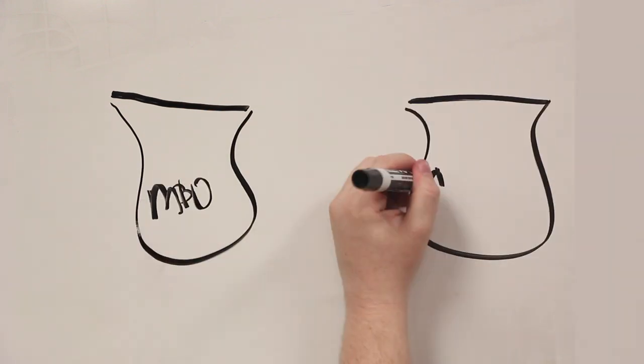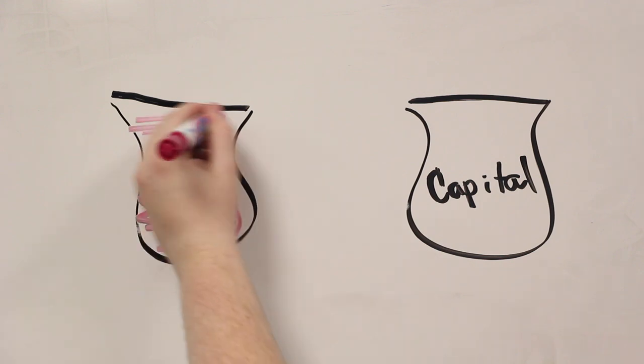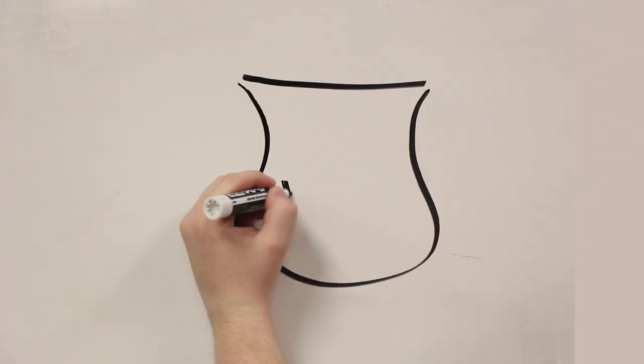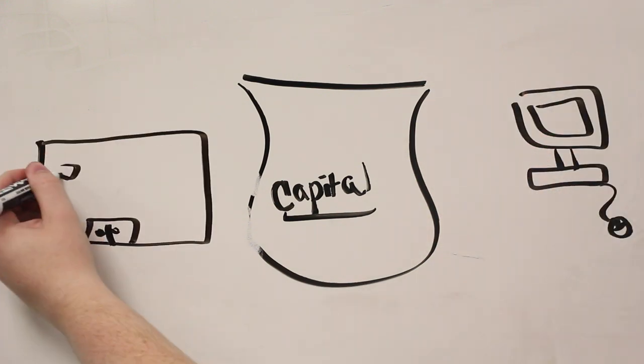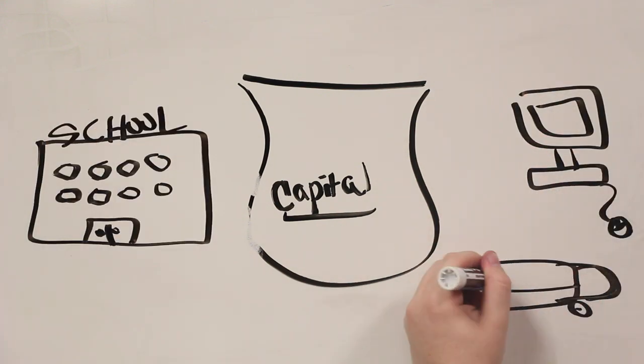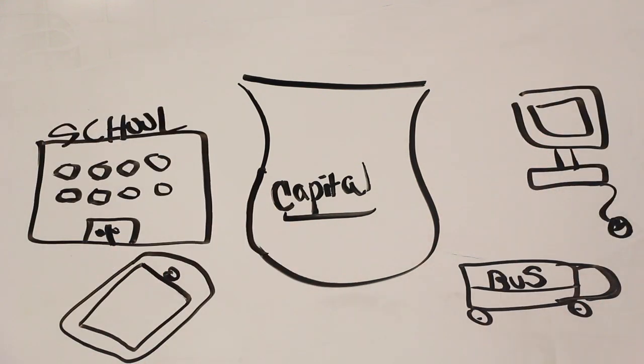State money is split into two parts, MNO, which stands for Maintenance and Operations, and capital. Mingus Union High School uses 2% of its money in capital and 98% in MNO. Capital funds are durable items such as buildings, furniture, equipment, buses, textbooks, and technology.